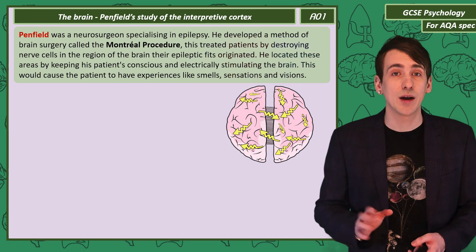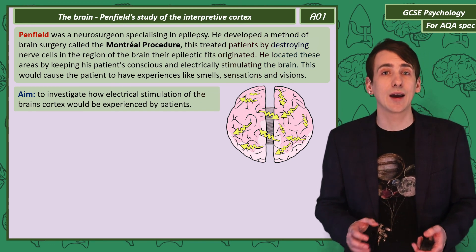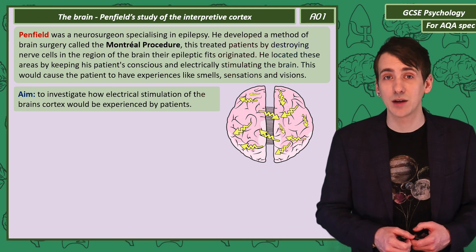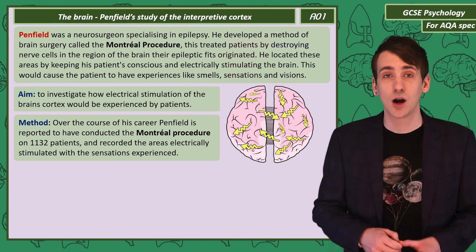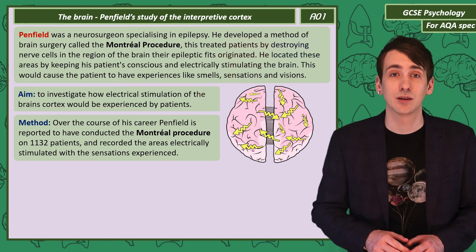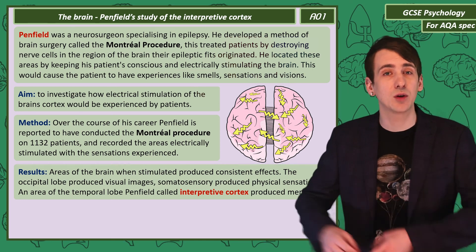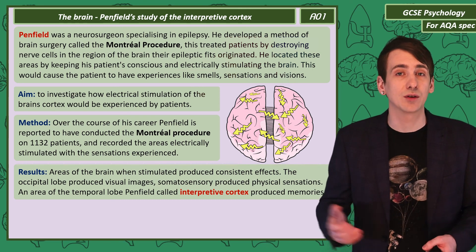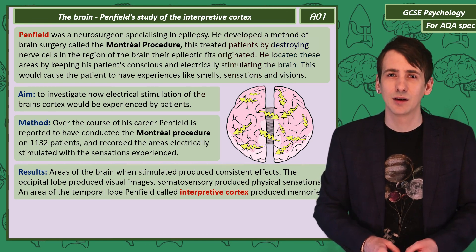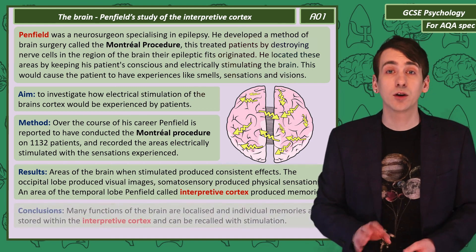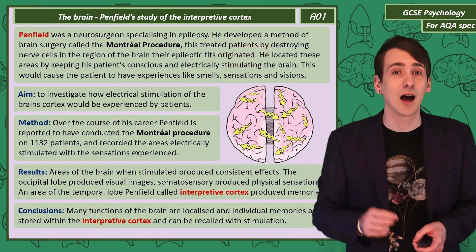During the electrical stimulation process, the patients would report sensations like smells and visions. The aim of Penfield's multi-year study was to investigate how the electrical stimulation of the brain's cortex would be experienced by patients. Over his long career, he conducted the Montreal Procedure on 1,132 patients, recording the locations he stimulated with the sensations experienced. He found that stimulating the same areas of the brain in different people produced consistent results. Stimulating the occipital lobe would generate visual images; stimulating the somatosensory region would produce physical sensations. One area of the temporal lobe, when stimulated, seemed to produce memories — an area he called the interpretive cortex. Penfield concluded that many functions of the brain are localised, and that individual memories are stored within the interpretive cortex and can be recalled with stimulation.